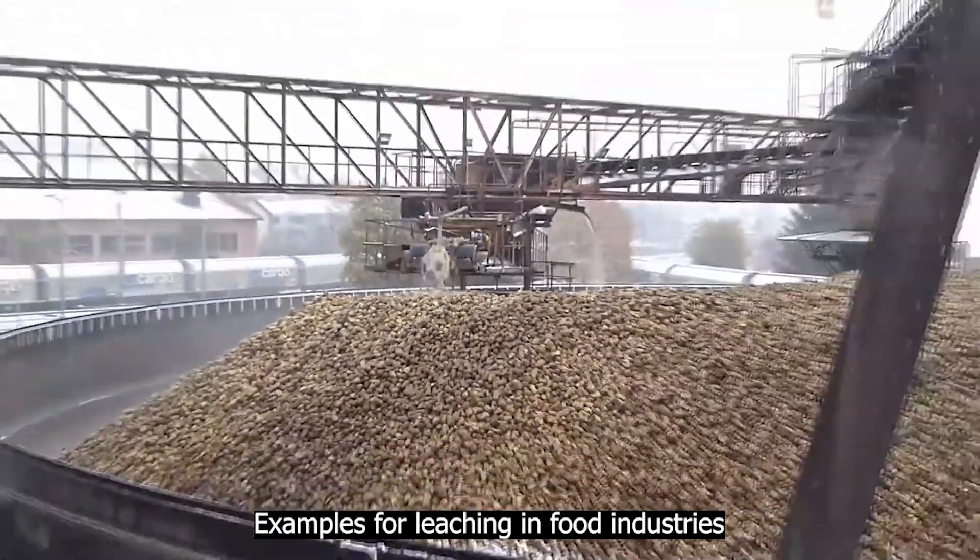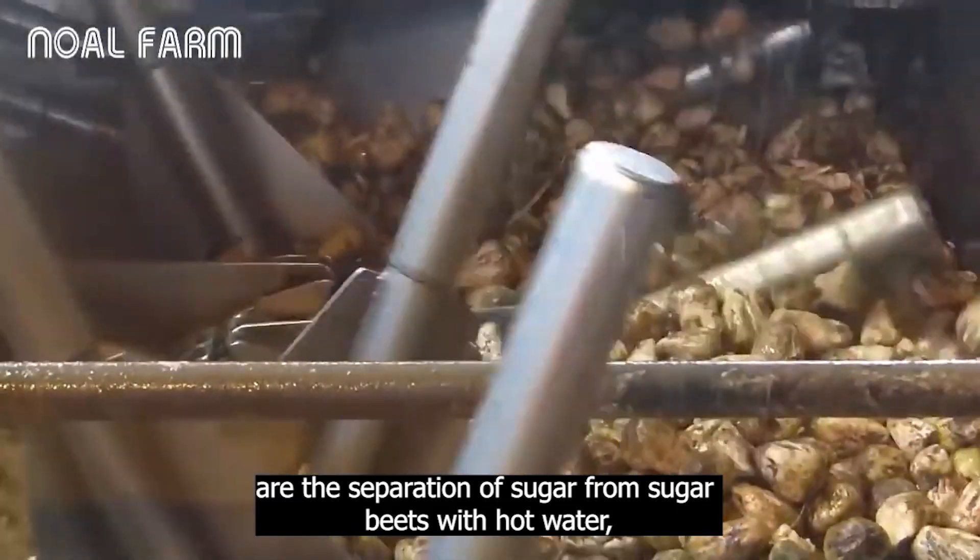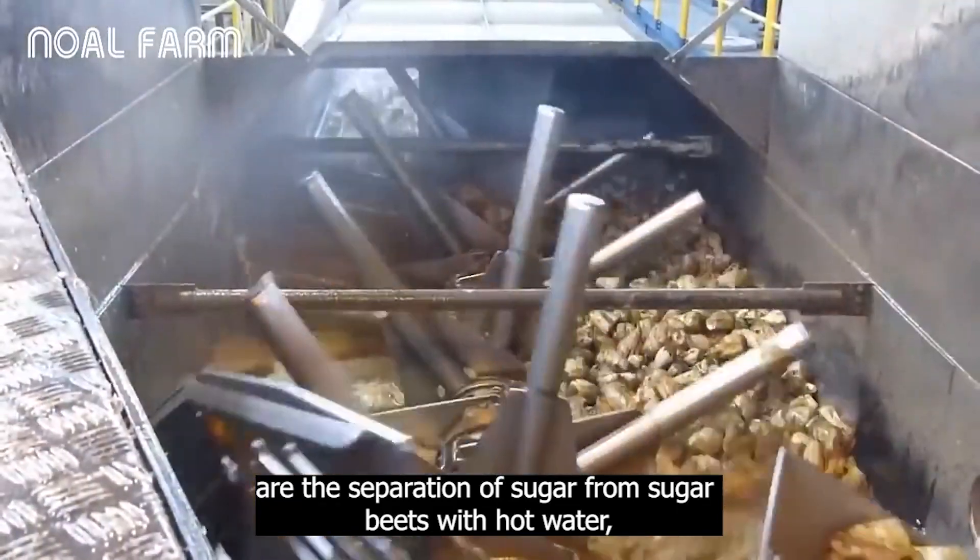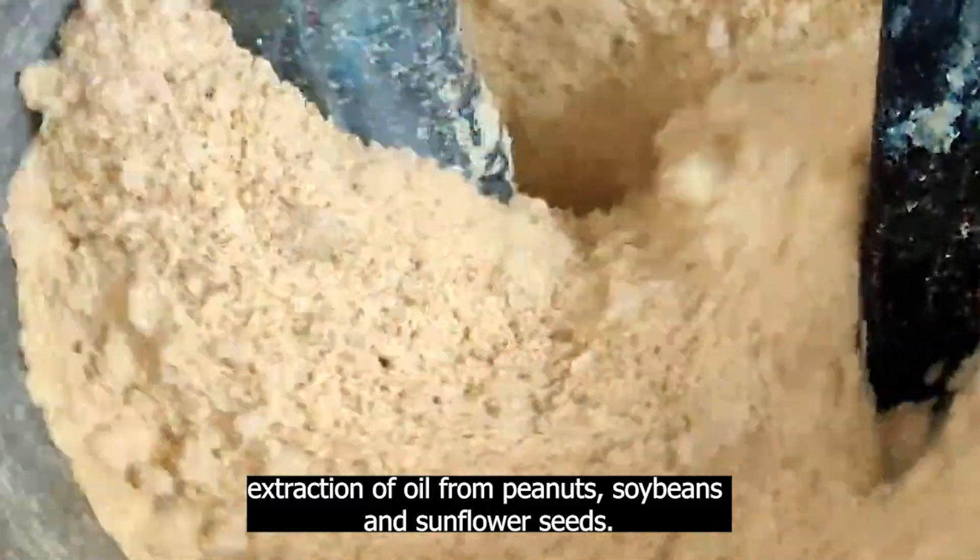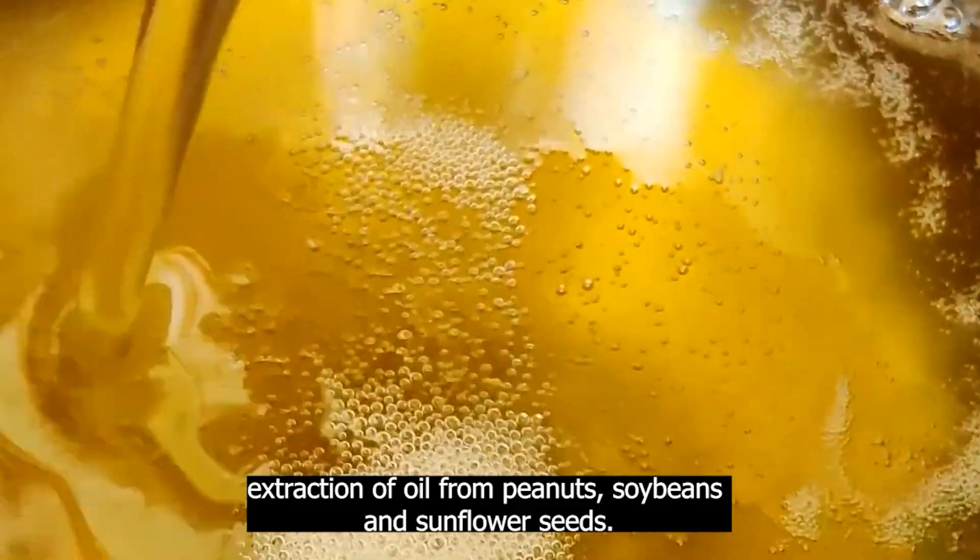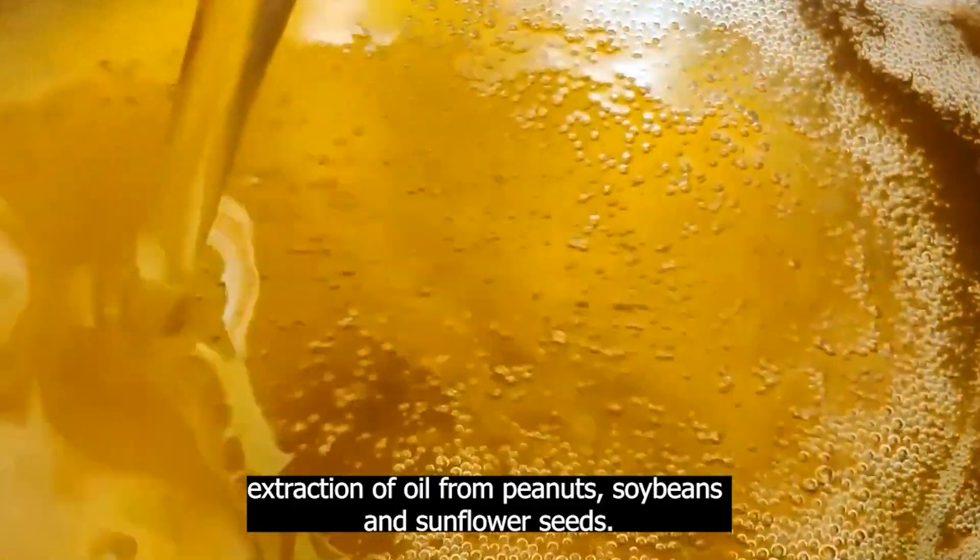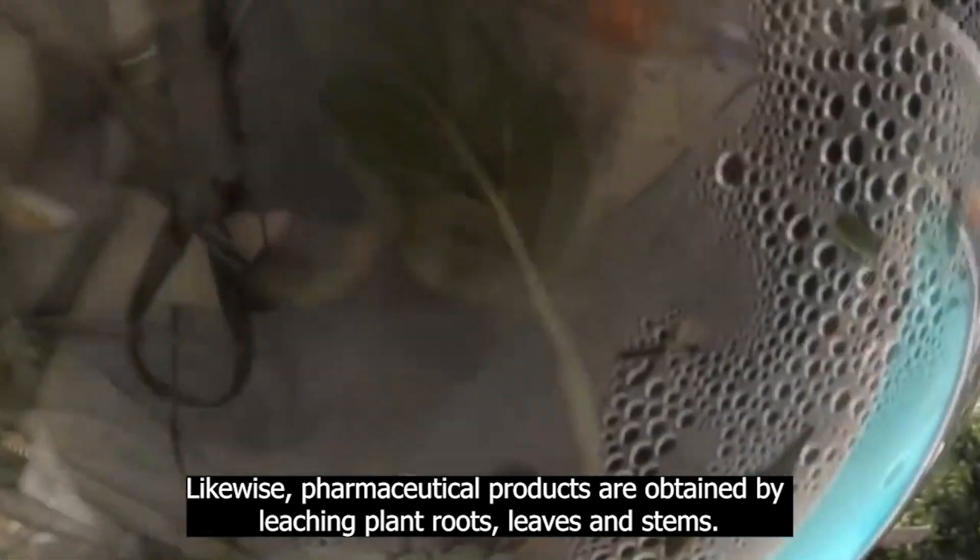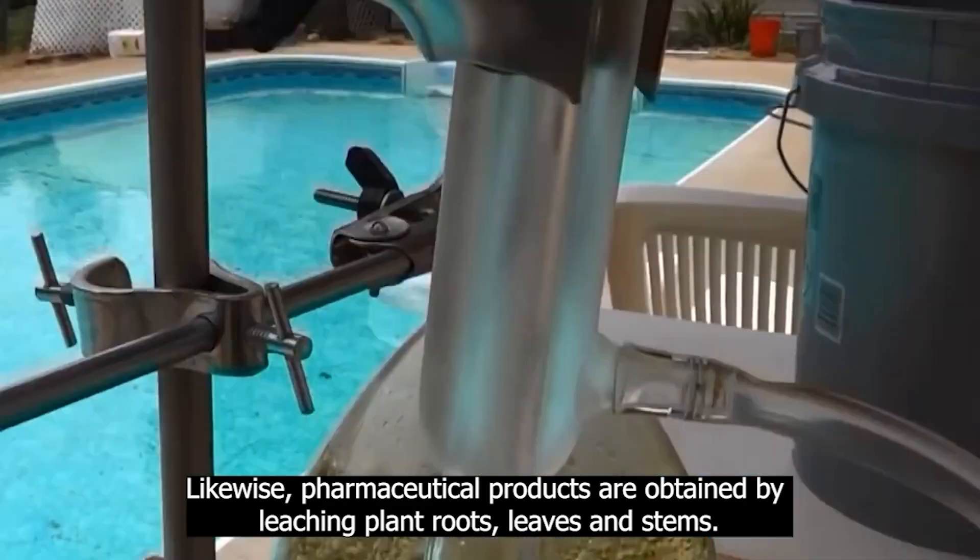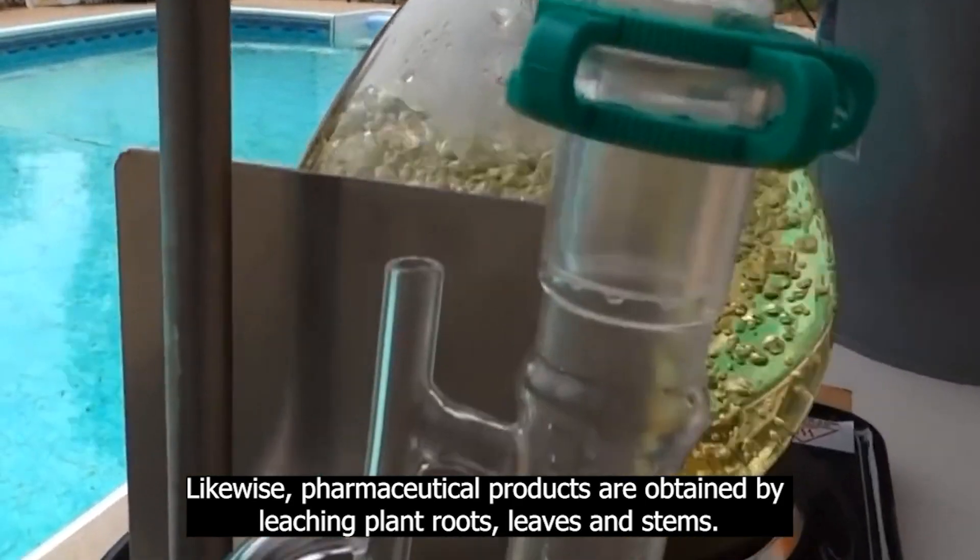Examples for leaching in food industries are the separation of sugar from sugar beets with hot water, extraction of oil from peanuts, soybeans, and sunflower seeds. Likewise, pharmacological products are obtained by leaching plant roots, leaves, and stems.